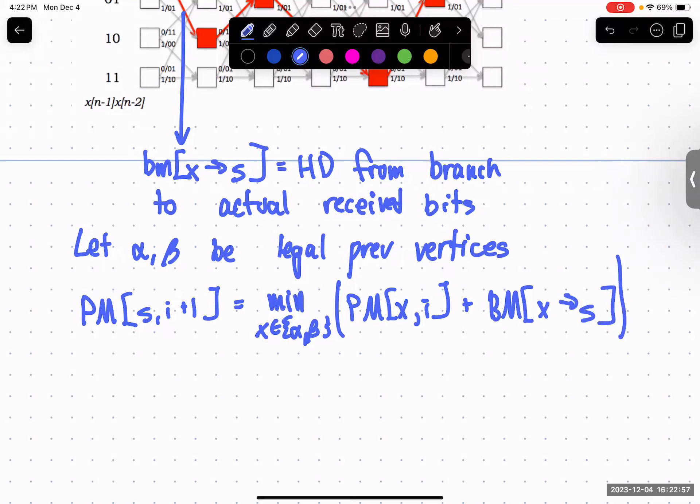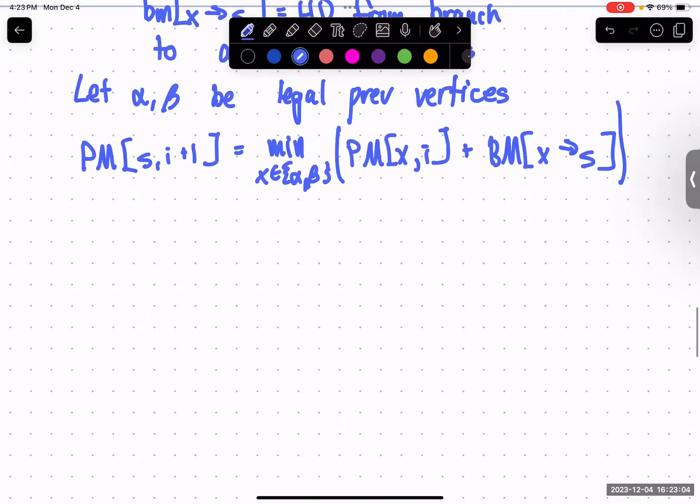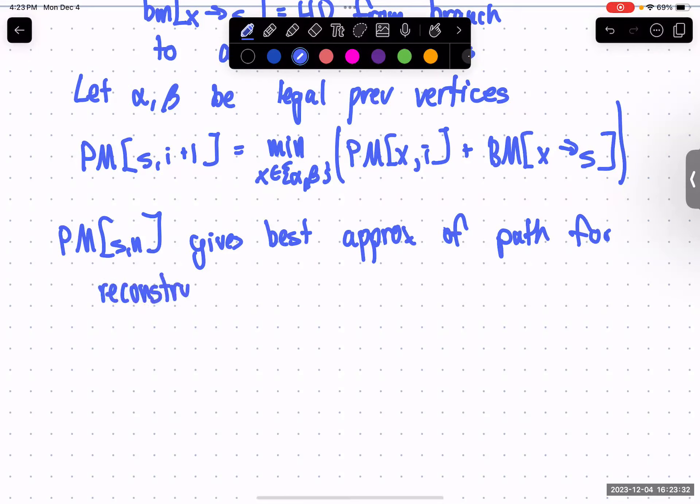And the hamming distance incurred would be whatever hamming distance we had at the previous state, plus the hamming distance given by the branch metric. On this edge from X to S. So this gives us a path through the trellis that has the smallest possible hamming distance. So therefore, PM[S_N] gives the best approximation of the path for reconstructing the code word.